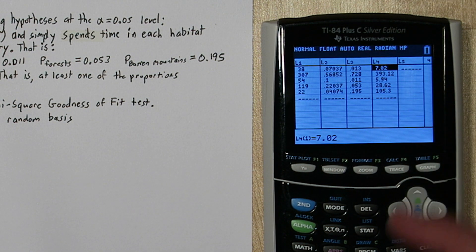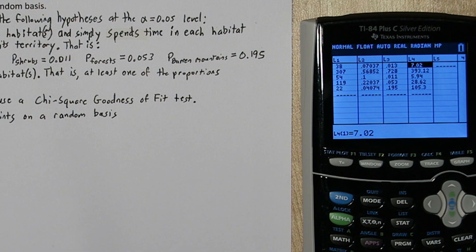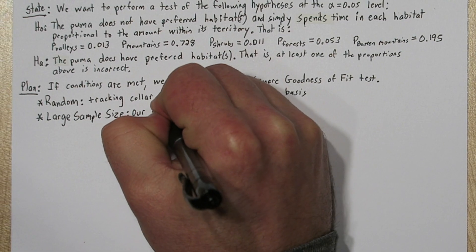So there we have it. These are our expected cell counts. And the good news is all of these are greater than five.